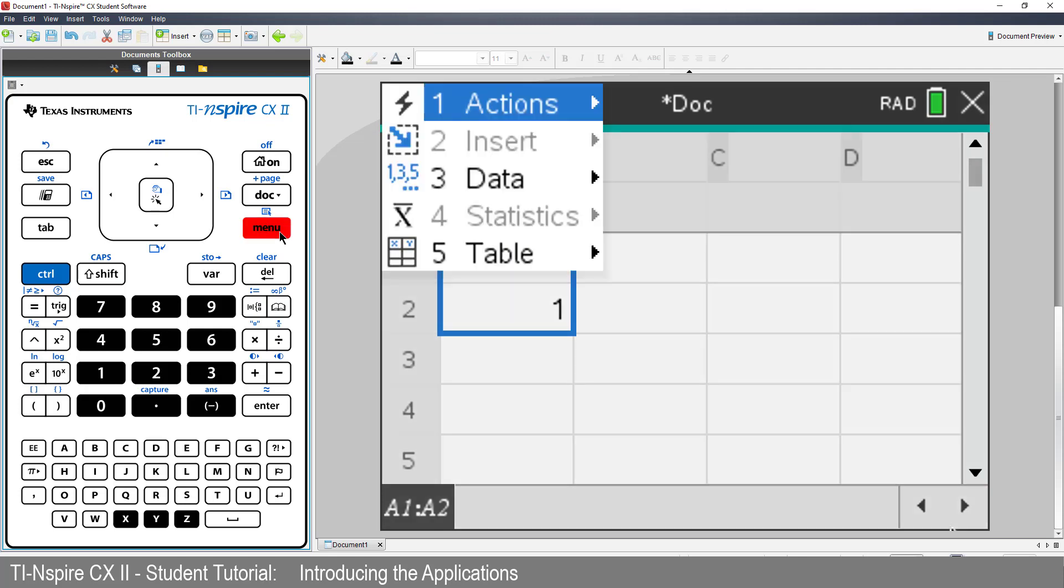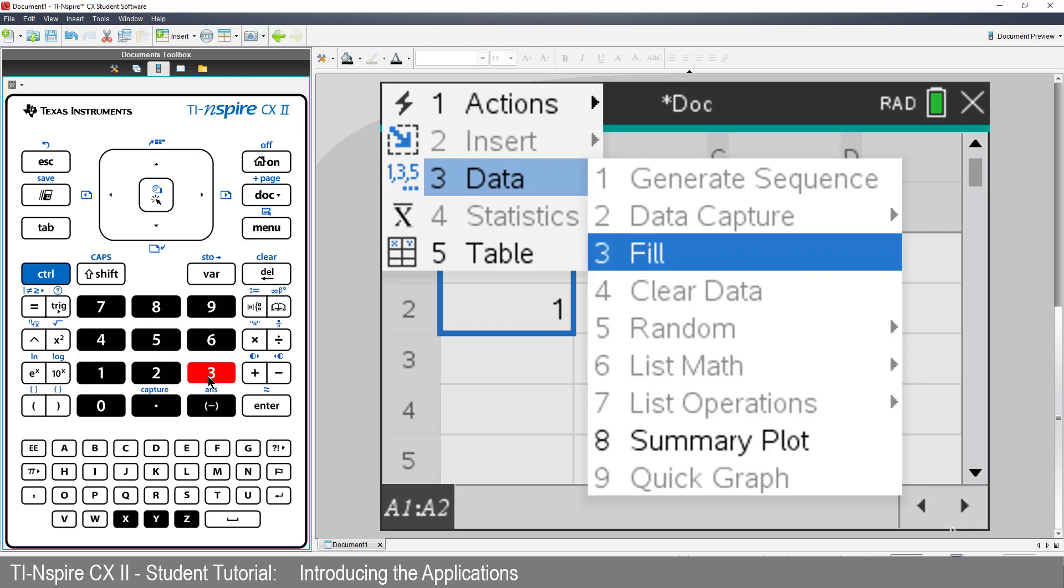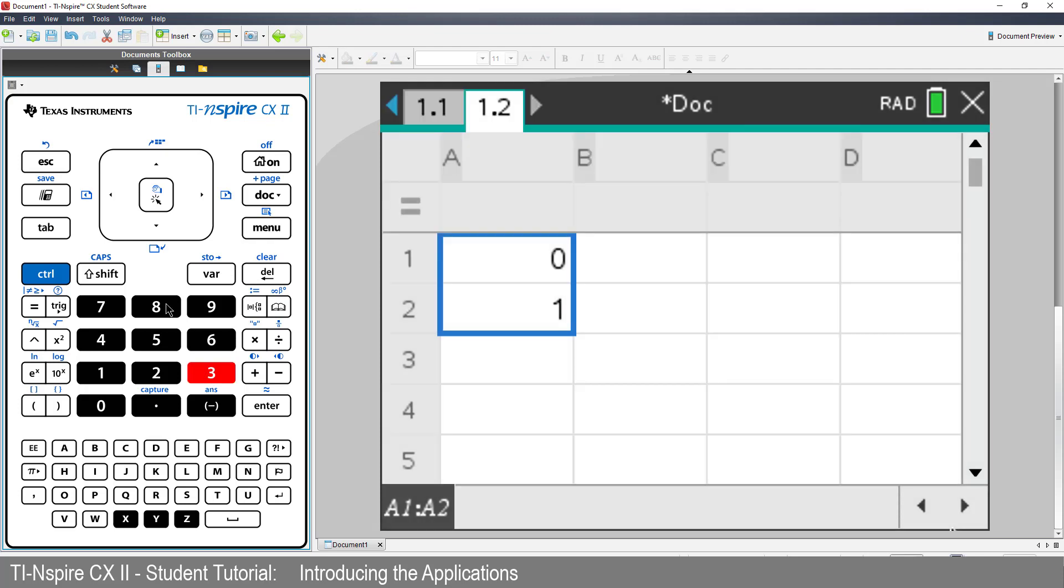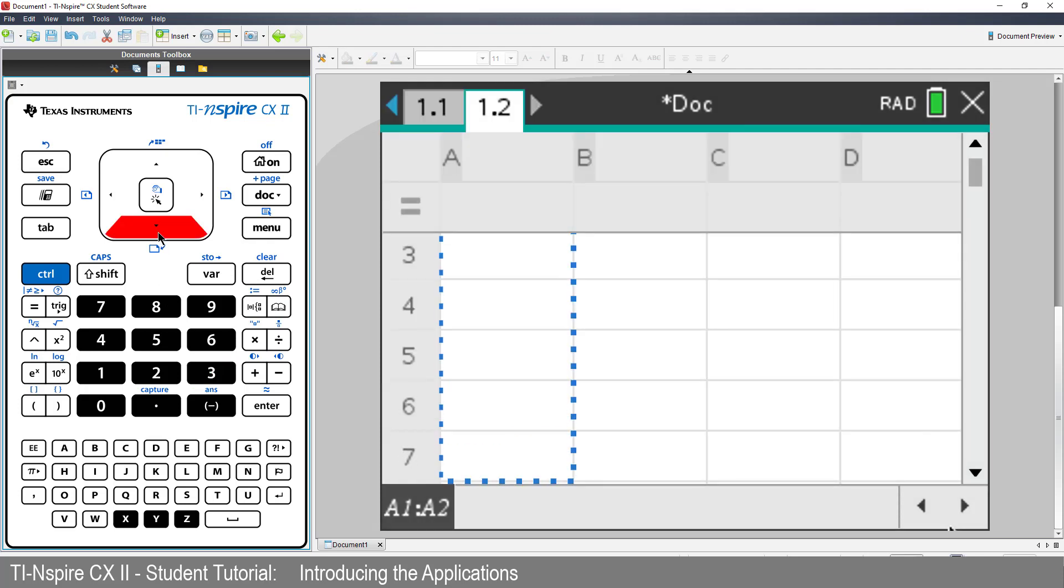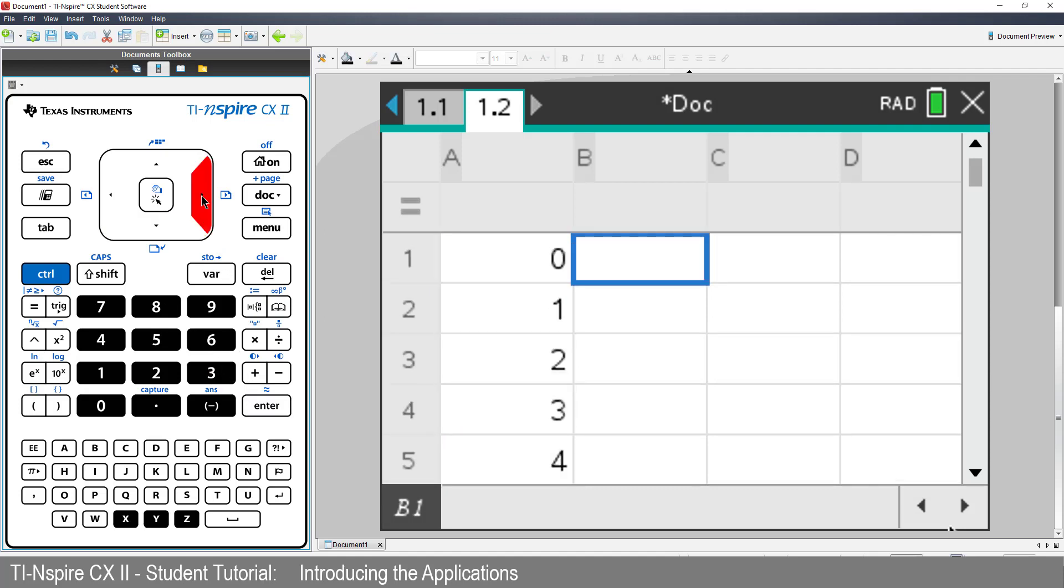Press Menu. Select Data. Then Fill. Now arrow down to cell A8. And press Enter. The calculator automatically identified and filled in the pattern.